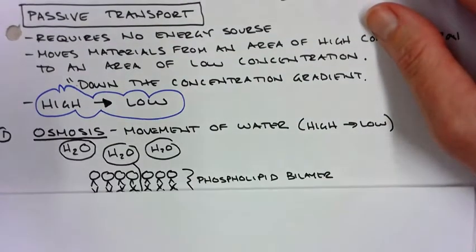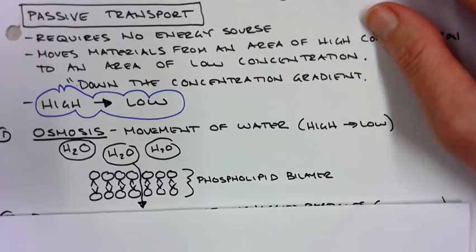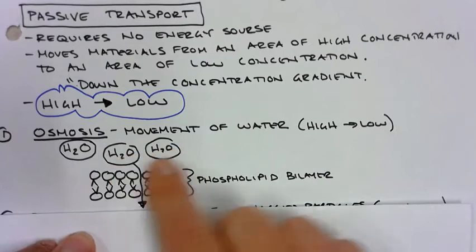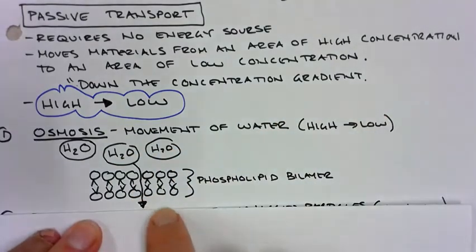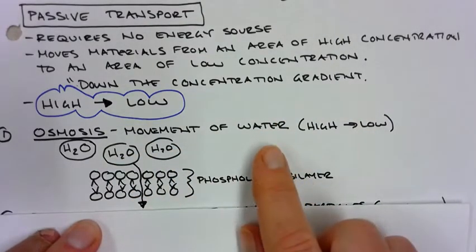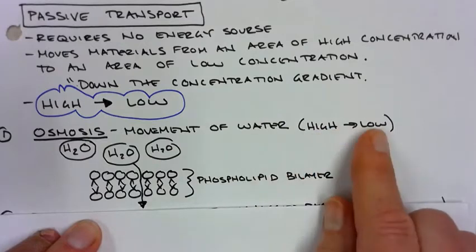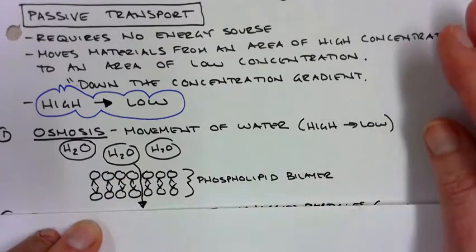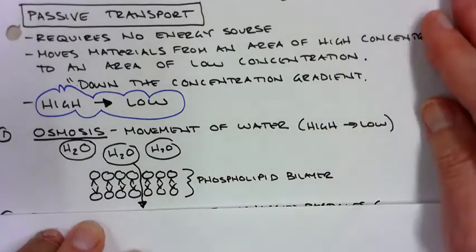The first type is something called osmosis. Osmosis is movement of water from a high concentration of water to an area of lower concentration. And so this is basically high to low. And basically water molecules move right through the phospholipid bilayer. They just flow right through that without a problem. They don't dissolve it. That's osmosis.